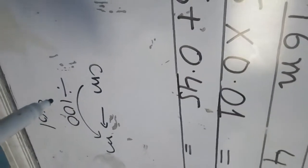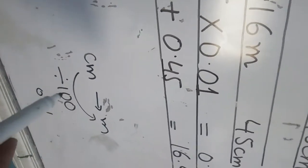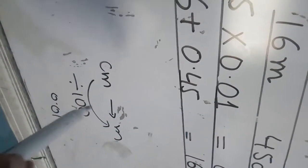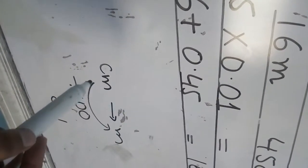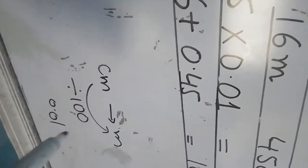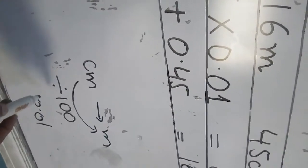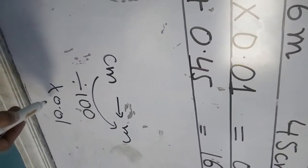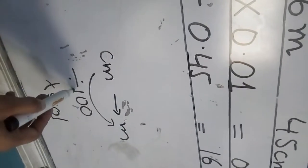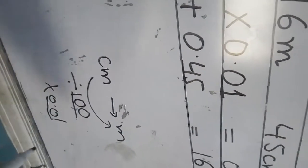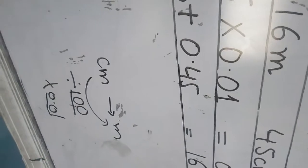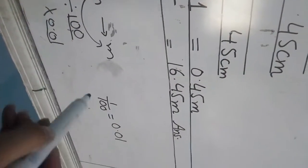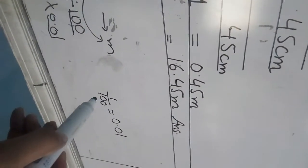For changing centimeter into meter, as you remember, firstly in previous exercises we did divide. We divide this value by 100. But now I am multiplying it with 0.01. That is the same value. 100, divided by 100 or 0.01, they are the same value, 1 over 100 or 0.01.